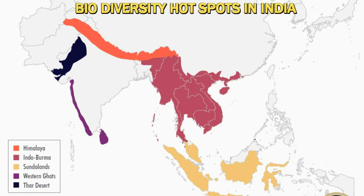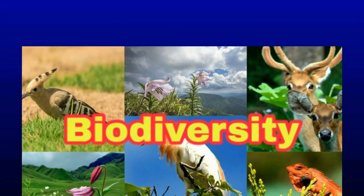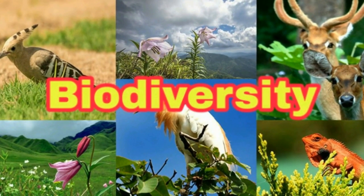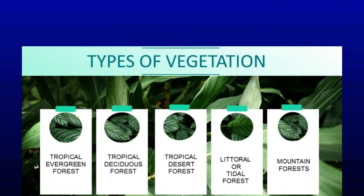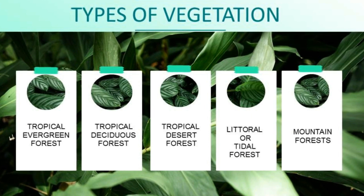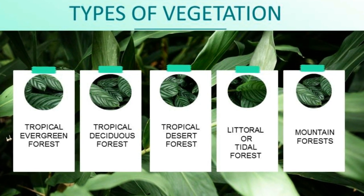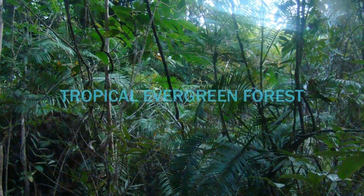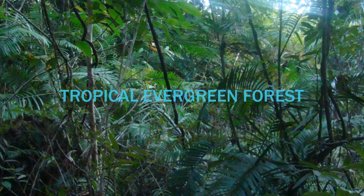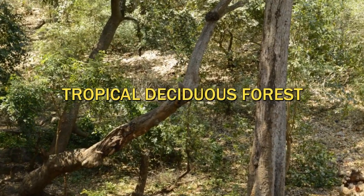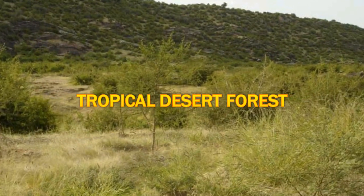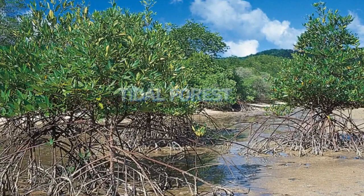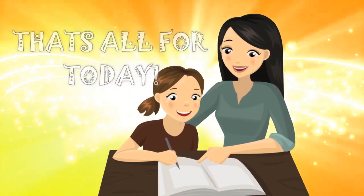India being a vast country, you can imagine the types of life forms available throughout the country. This brings us to the types of vegetation found in India: the tropical evergreen forest, the tropical deciduous forest, tropical desert forest, tidal forest, and the mountain forest.